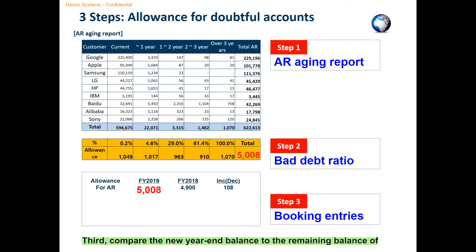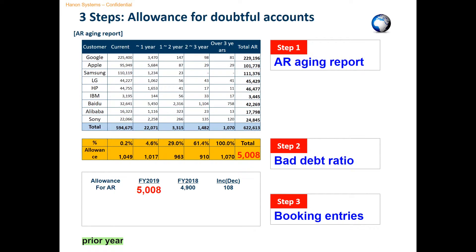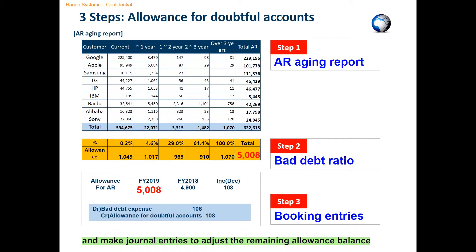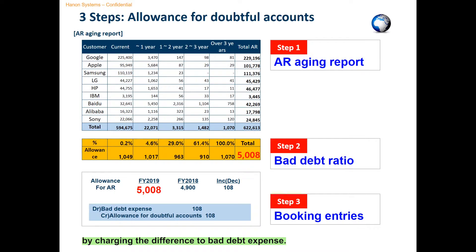Third, compare the new year-end balance to the remaining balance of the prior year and make journal entries to adjust the remaining allowance balance to the new one by charging the difference to bad debt expense.